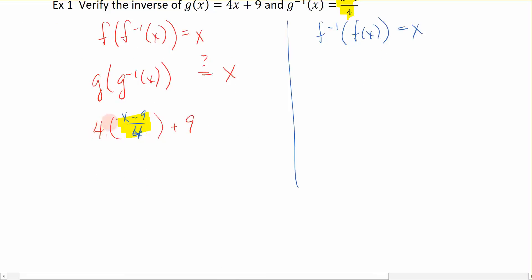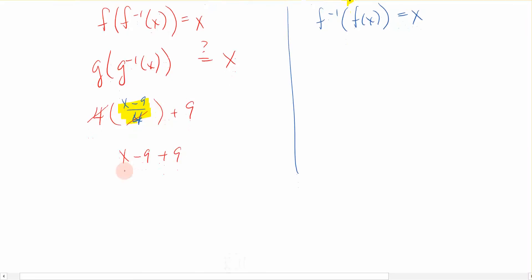If I have 4 times this fraction plus 9, the 4 on the outside cancels with the 4 in the denominator, leaving me with just x minus 9 plus 9. So x minus 9 plus 9 is just x, which equals the x that I'm supposed to come out with.